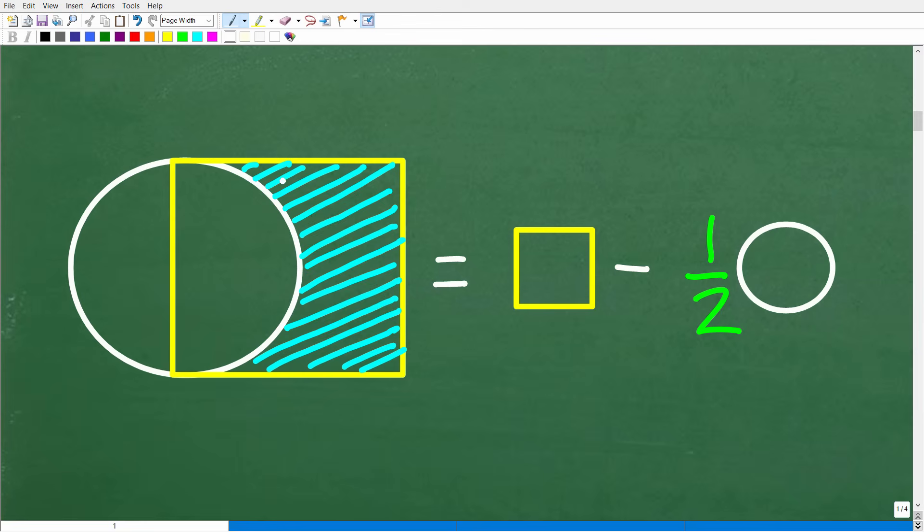To get to the area of this region right here, we have to kind of separate the two figures. So we have a square and we have a circle. So if we could determine the complete area of the square, which of course would be this whole part right there, and then subtract away, not the entire circle. That's not going to help us because this part of the circle right here isn't involved in this figure right here. But this part of the circle right here is, so that's a semicircle.